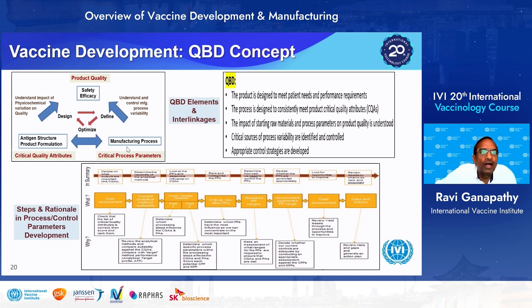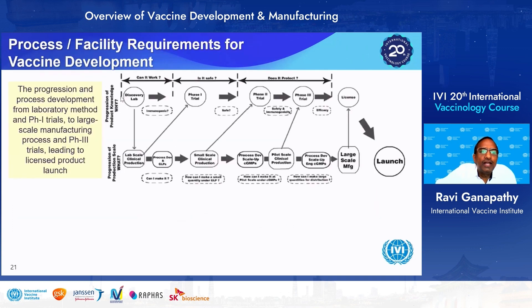Product quality, CPP, and CQA are all interlinked and must be well understood to ensure the process developed is robust and reproducible. Usually in a discovery lab at lab scale, small-scale material is produced to check phase one proof of concept. Then a phase one trial is conducted with material produced at small-scale clinical GMP production, mainly to check safety. Process development then proceeds through a pilot-scale process, where materials for phase two and phase three are made, and then the final large-scale manufacturing process is developed for licensure and launch.